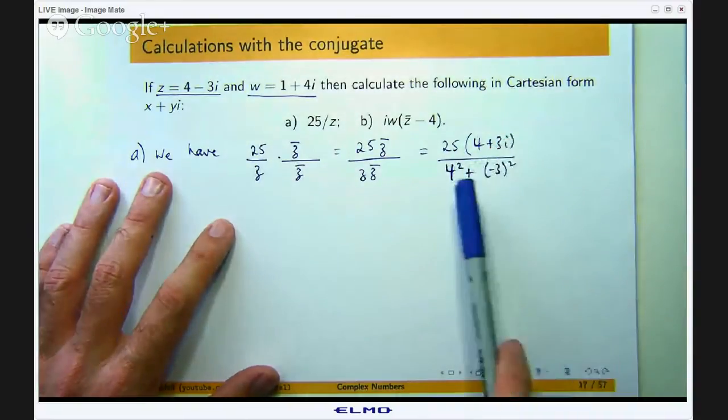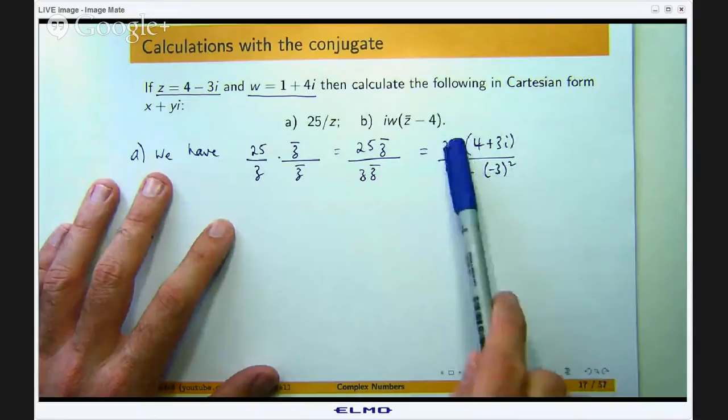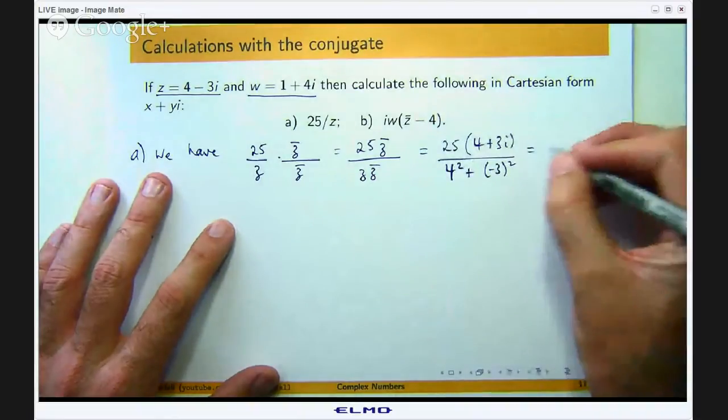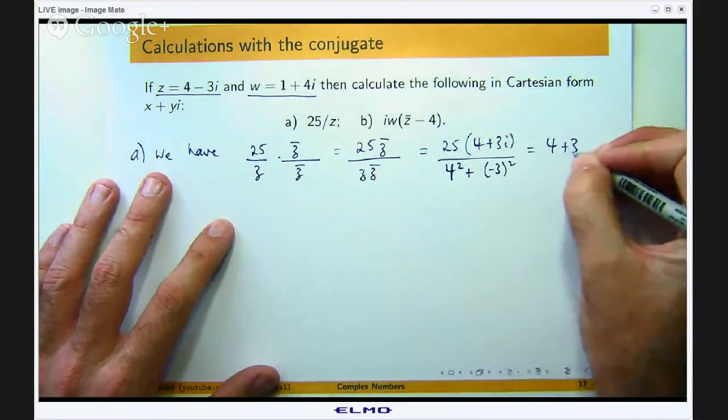So on the bottom I am going to get 4 squared plus negative 3 squared. That is 16 plus 9 so that is 25 on 25 so that will cancel and you will be left with 4 plus 3i.